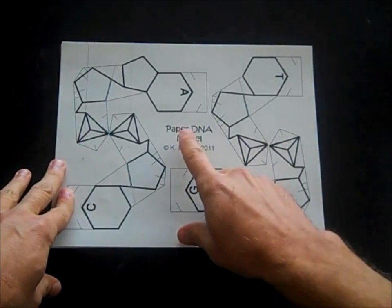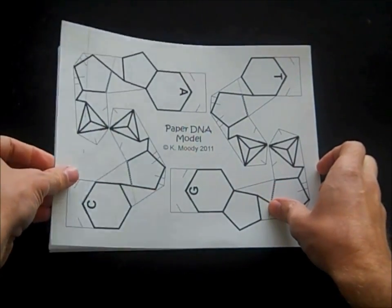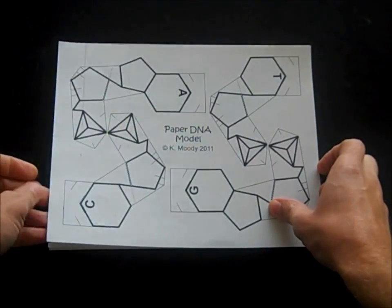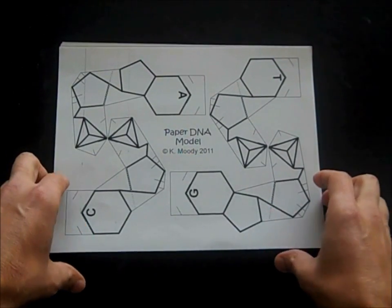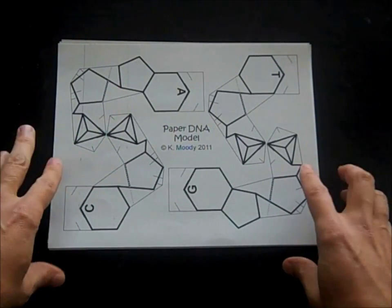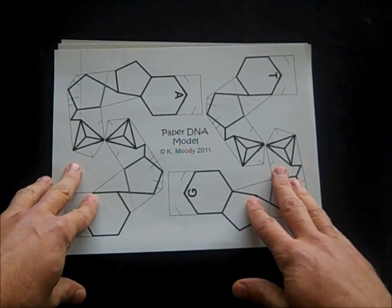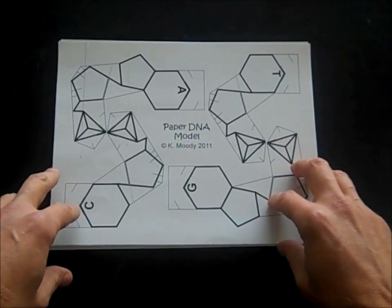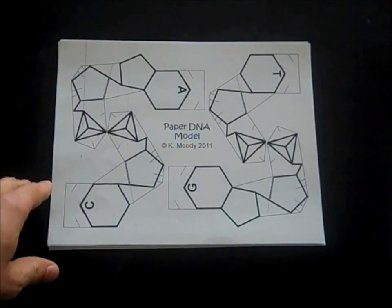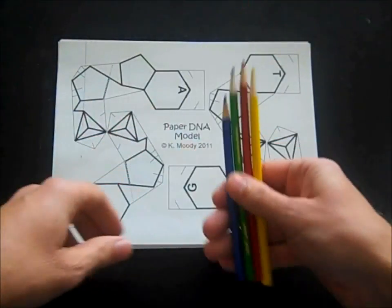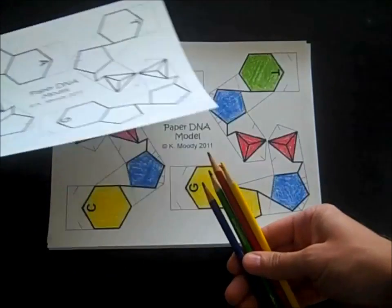Now it says here paper DNA, but I want to point out that this is actually cardstock, 110 pound cardstock. So keep in mind that you'll probably be really frustrated if you actually try to do this with standard paper because it's just not rigid enough. Okay, so the first step is to color the nucleotides and cut them out. And I've colored them with some colored pencils here.